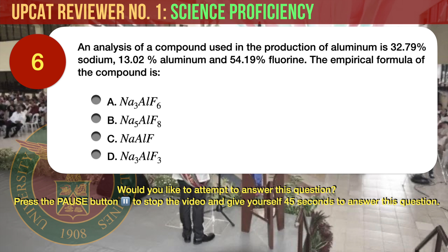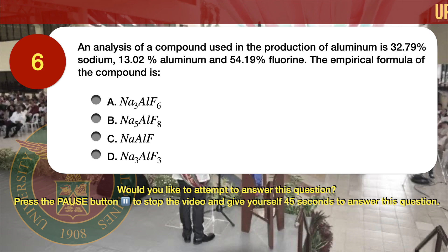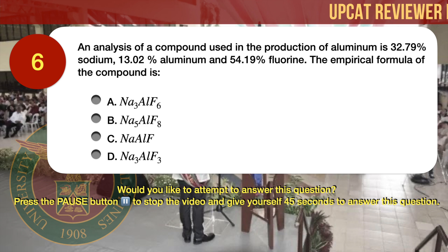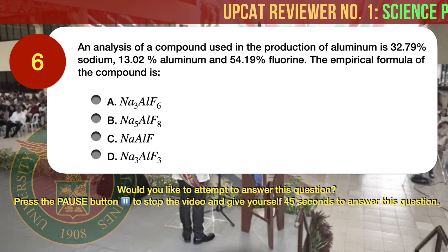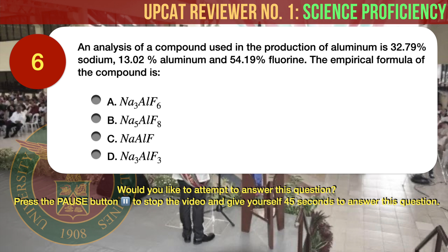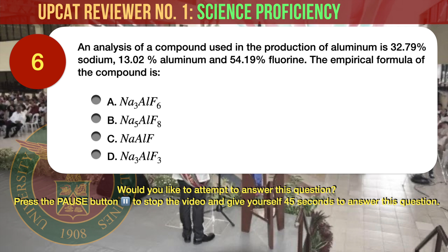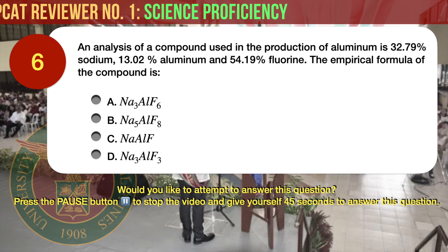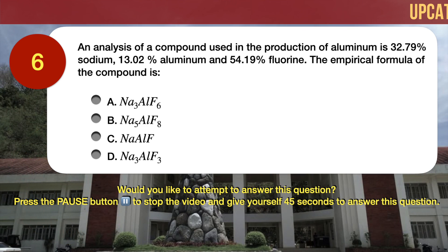Question number 6. An analysis of a compound used in the production of aluminum is 32.79% sodium, 13.02% aluminum, and 54.19% fluorine. The empirical formula of the compound is: A. Na3AlF6. B. Na5AlF8. C. NaAlF. D. Na3AlF3.